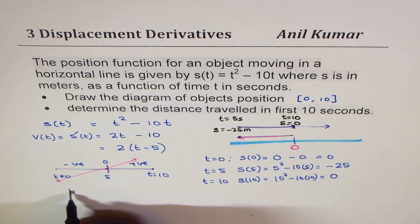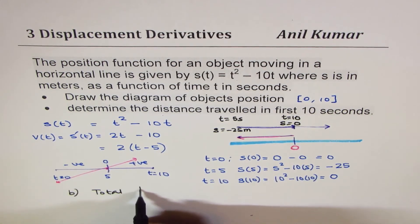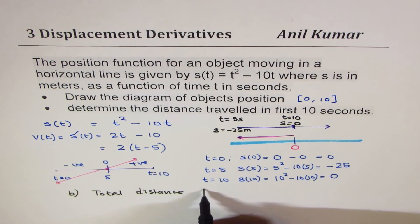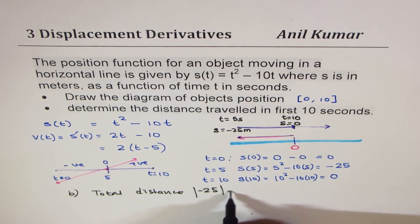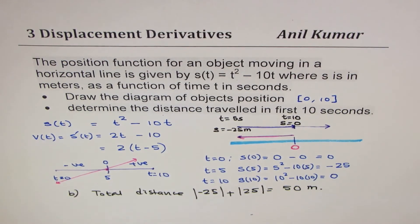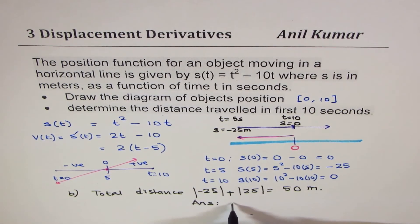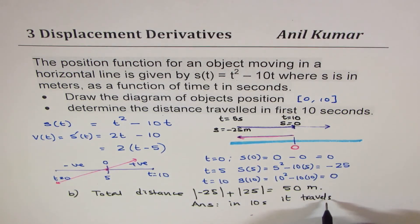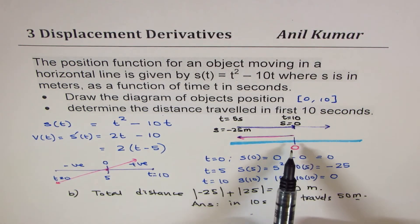And the total distance, which is part b, total distance is how much? Total distance covered is 25 left and 25 return. So we have to add the absolute values of these displacements to get total distance, which is 50 meters. So our answer is that in first 10 seconds, it travels 50 meters. You will notice that the displacement after 10 seconds is 0, but the distance traveled is 50 meters, and that is very important to understand.